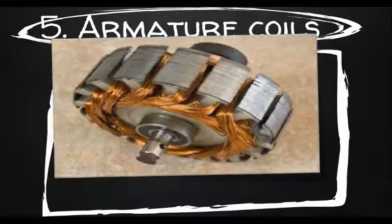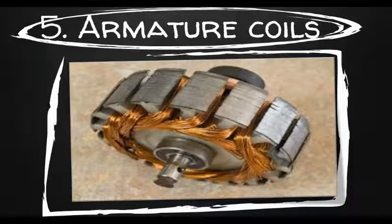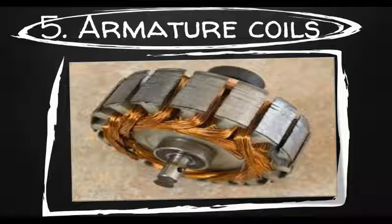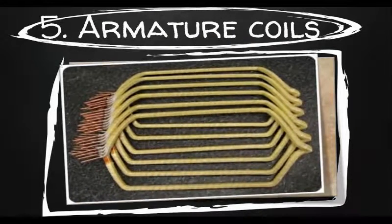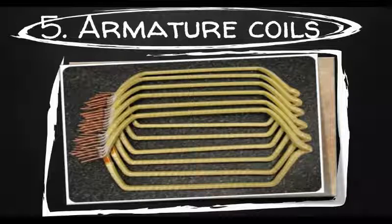Armature coils or armature windings: The armature windings are usually former wound. These are first wound in the form of flat rectangular coils and are pulled into their proper shape in a coil puller. Various conductors of the coils are insulated from each other. The conductors are placed in the armature slots which are lined with tough insulating material. Each coil consists of a number of turns of wire, each turn taped and insulated, and each side of the turn is called the conductor. There are two types of windings: lap winding and wave winding. The difference between the two is merely due to the different arrangement of the end connectors at the commutator end of the armature.